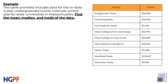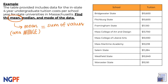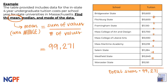Let's first calculate the mean. The mean is just the average of all of these values, which we can calculate by adding each data point together, then dividing by how many data points we have. In this case, if I add all of these values in a calculator, the total sum is equal to $99,279. Then since there are nine schools, I will divide the sum by nine, which gives me $11,031.